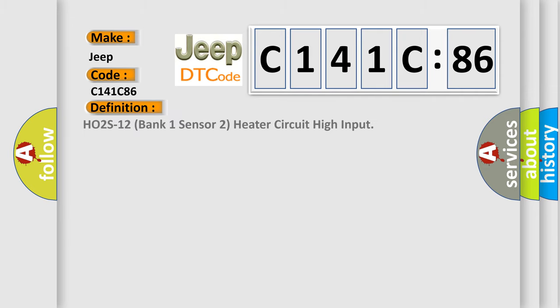The basic definition is: H02S12 bank one sensor two heater circuit high input. And now this is a short description of this DTC code.